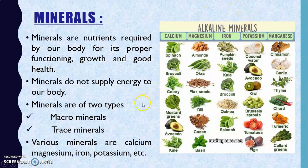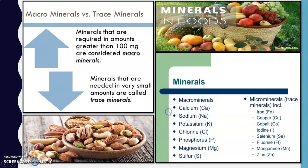Minerals are of two types: macro minerals and trace minerals. Macro minerals are the minerals required in a greater amount in the food. Examples of macro minerals include calcium, sodium, potassium, chlorine, phosphorus, magnesium, and sulfur. We should include a higher amount of these minerals in our food.